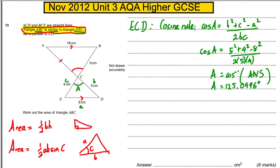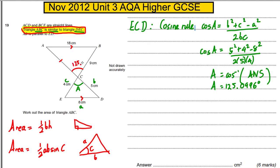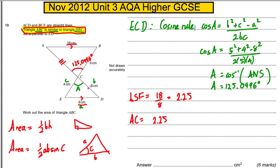We now have that angle. Because these two angles are vertically opposite, the angle in triangle ABC is also 125.0996 degrees. Now we need to find the length of side AC. The triangles are similar, so there's a length scale factor. The matching sides are 18 and 8, so the length scale factor is 18 over 8, which equals 2.25. This is the longer triangle, so AC equals 2.25 times five, which equals 11.25.